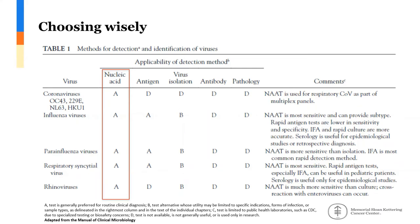It is very important that we choose wisely when testing for respiratory viruses. Looking at a table of common respiratory viruses and their detection methods, nucleic acid amplification methods are the generally preferred method in category A for all these viruses. For certain viruses antigen testing is available, but there are important considerations — for RSV, for example, antigen testing is good in pediatric patients but not in adults.